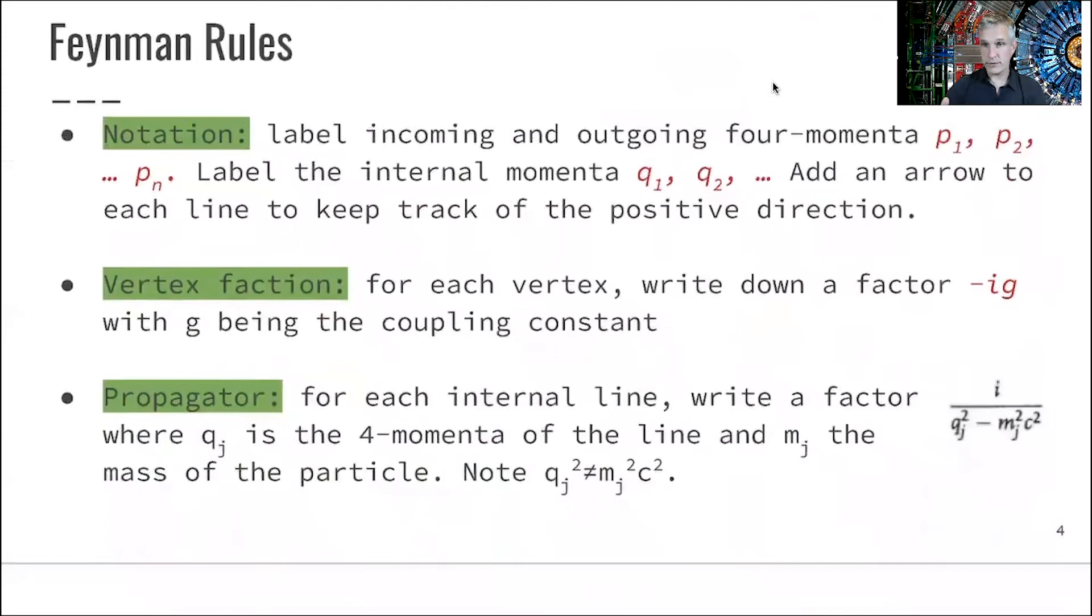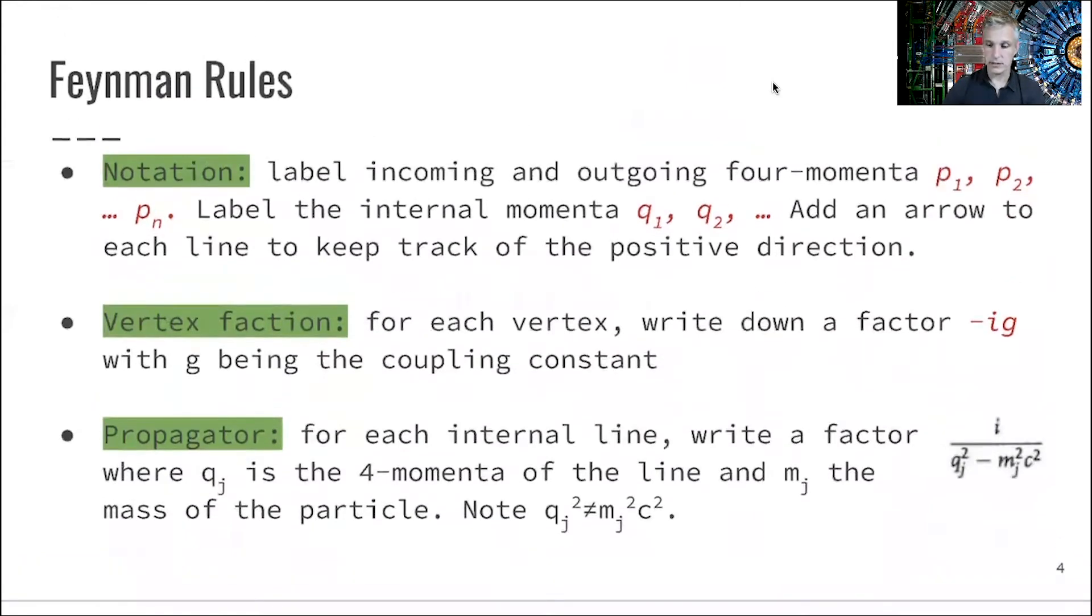So the recipe has a number of steps, and the key is to just follow those steps in order to get to the desired result. The first step is to label incoming and outgoing four momenta of particles. So we label them with P1, P2, and Pn. We also want to label all internal momenta. So if you have an internal line, then we want to label this internal momenta with Q1, Q2, and so on. We want to add arrows to each line to keep track of what is the positive direction. As we discussed before, particles might travel backward in time, typically antiparticles. And for those, we have to make sure that we correctly account for the momenta.